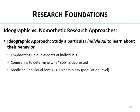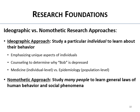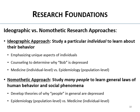In epidemiology, we're trying to solve problems at the population level — that's the nomothetic approach. The nomothetic approach is studying many people to learn general laws of human behavior and social phenomena. We develop theories of why people in general are depressed, not just Bob. It's a population-based approach — epidemiology literally came out of animal husbandry and herd management, where they're trying to keep the herd healthy. That's where 'herd immunity' language comes from.